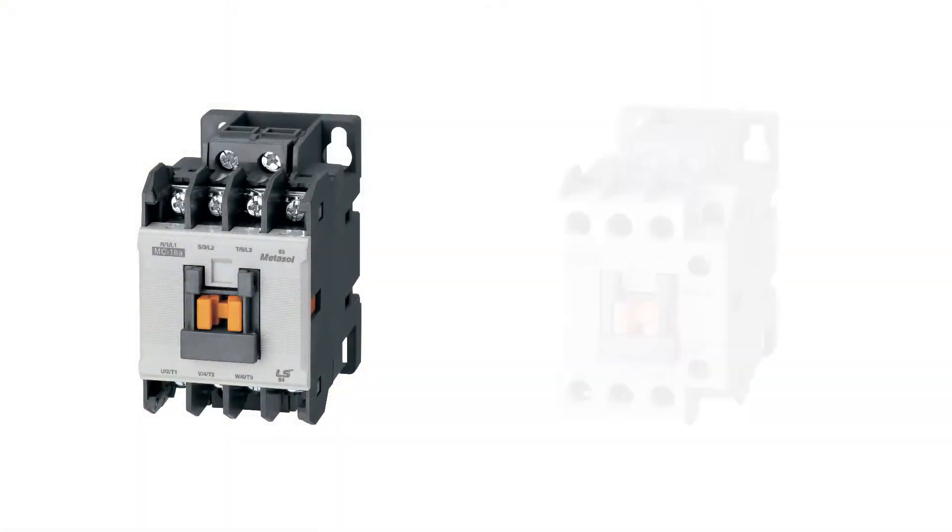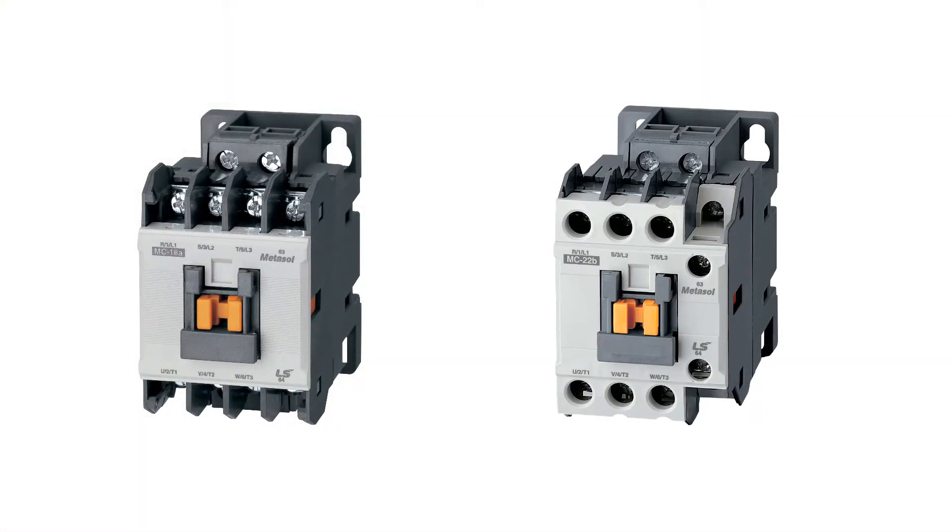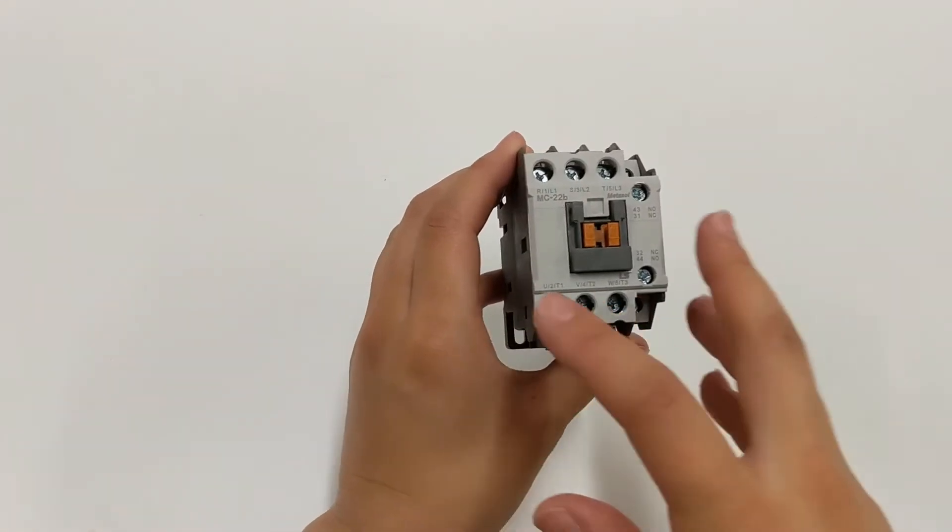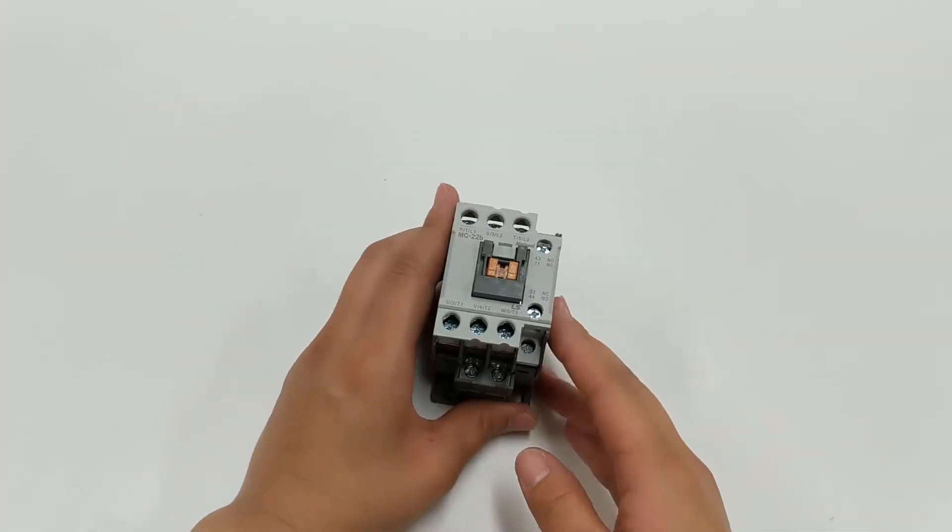For the MC 18M frame to 22M frame as well as MR 4 to 8 frame contactors, remove the contactor from the box and place on a flat surface.